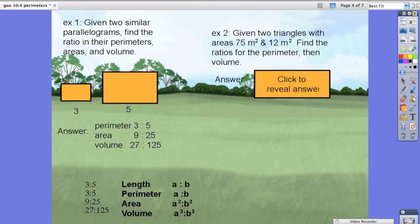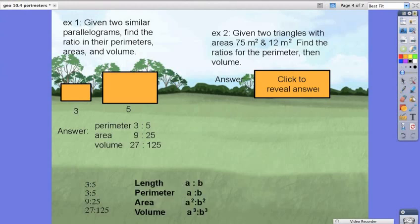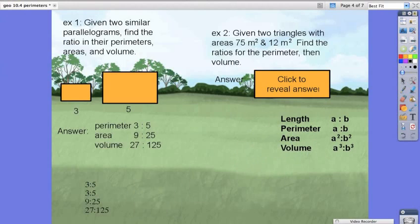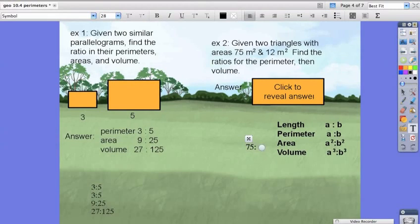So, again, using this table, they give us the ratio of the areas. So we're going to say 75 to 12,